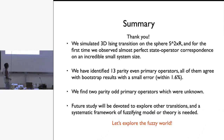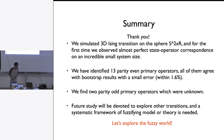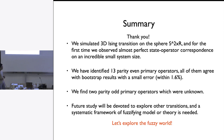To wrap up: we simulated 3D Ising transitions on the sphere and for the first time observed almost perfect state-operator correspondence on incredibly small system sizes. We identified 13 parity-even primary operators all agreeing with bootstrap with small errors, and found two new parity-odd primary operators not previously known. Future work will explore other phase transitions and develop a systematic framework for fuzzifying models and theories. Thank you.